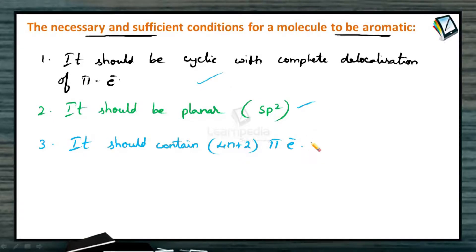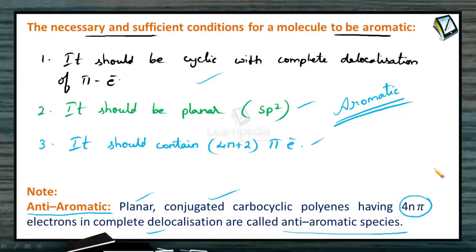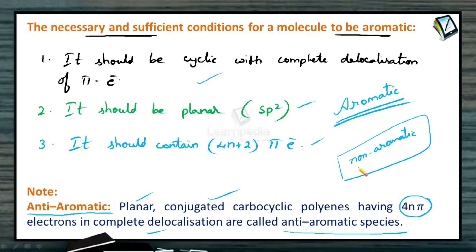When all three conditions are satisfied, then only we can say that the given organic compound is aromatic in nature. There is another type: anti-aromatic compounds. These are also planar and conjugated with complete delocalization of pi electrons, but they possess 4n pi electrons. Cyclic planar compounds having 4n pi electrons in complete delocalization are called anti-aromatic. All other compounds that are neither aromatic nor anti-aromatic are called non-aromatic compounds.